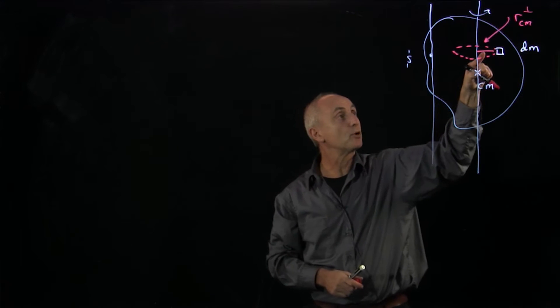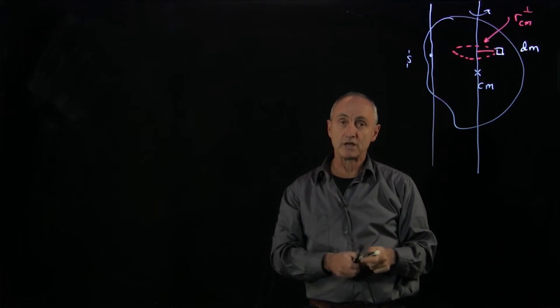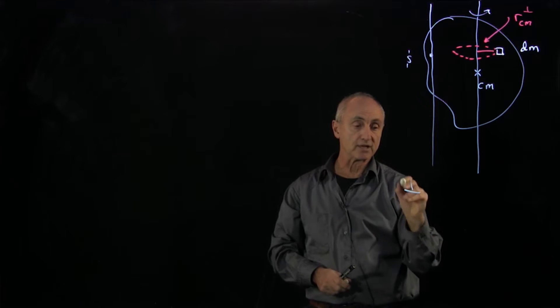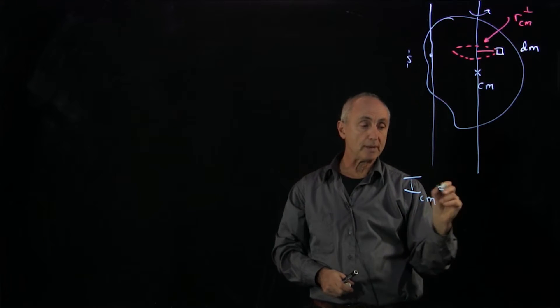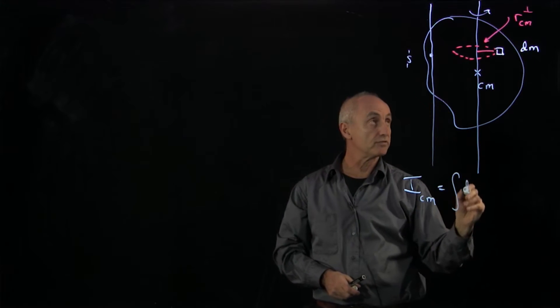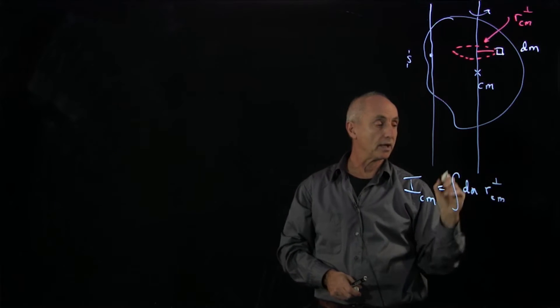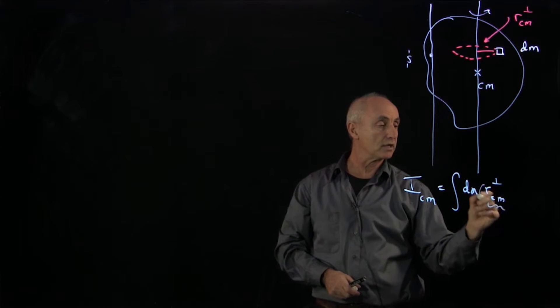So this perpendicular distance is what shows up in our definition for the center of mass moment of inertia about that axis. It's the integral of dm r_cm_perp quantity squared.